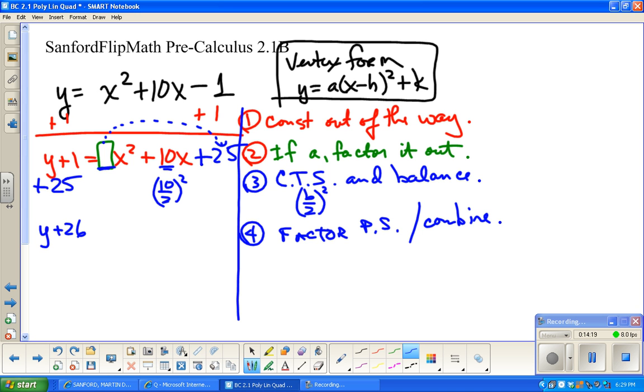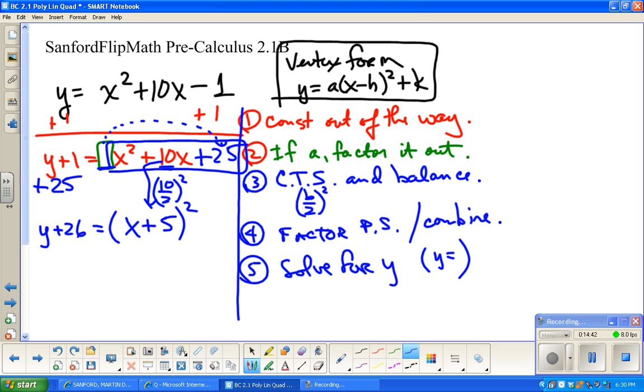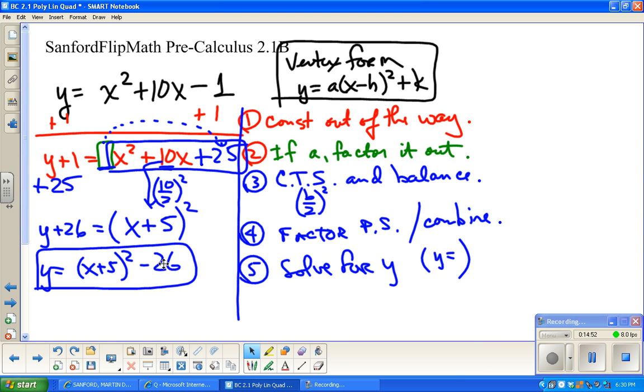So y + 26 equals, well this is going to factor into something squared, and that something is going to involve half of b, or x + 5 in other words. Then the last thing we need to do is solve for y, in other words make it y equals. So y = (x+5)² - 26. And if you'd prefer to write that f(x) or whatever, that's fine. That's the whole thing for that one.